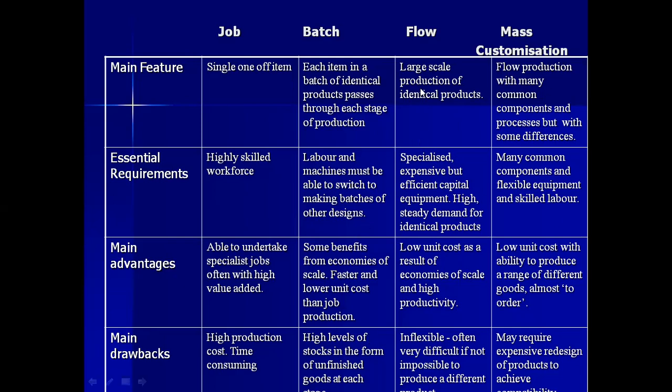Moving on to flow production: it is a continuous process using capital-intensive production with heavy use of machines. Goods are produced in a continuous flow, in very large quantities. It normally occurs when there is a steady demand in the market — think of grocery items bought daily. Flow production involves large-scale production of identical products, which is also one of its main features, because the continuous process produces items that are exactly the same.